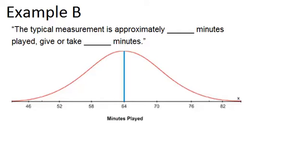The typical measurement is approximately blank minutes played, give or take blank minutes. So again, in the first blank, we put our mean because that's the typical value for a normally distributed data set. And we can see that is 64 minutes played. So that is the mean, give or take how many minutes.